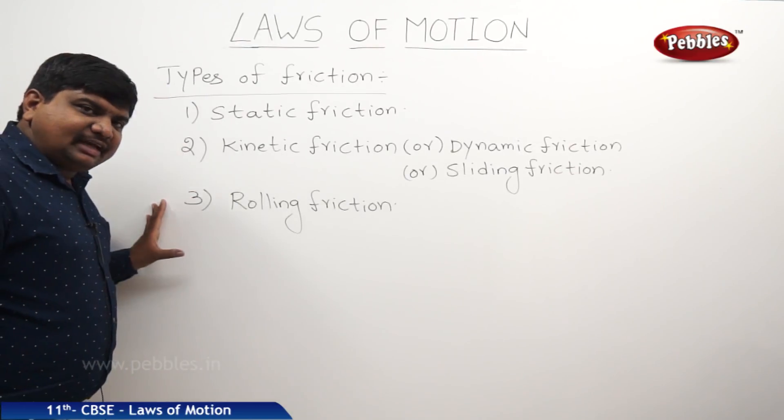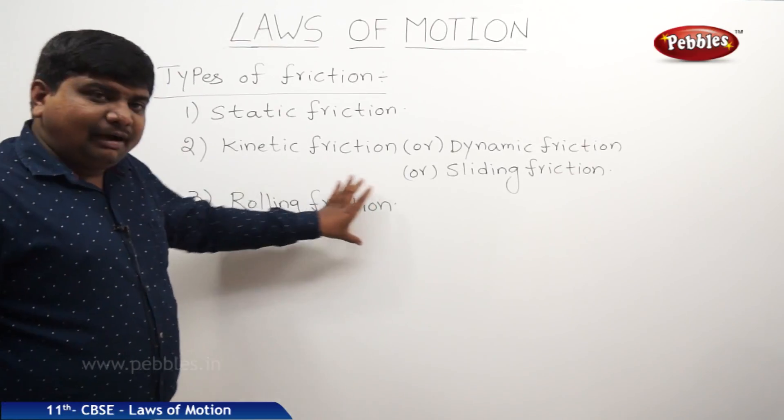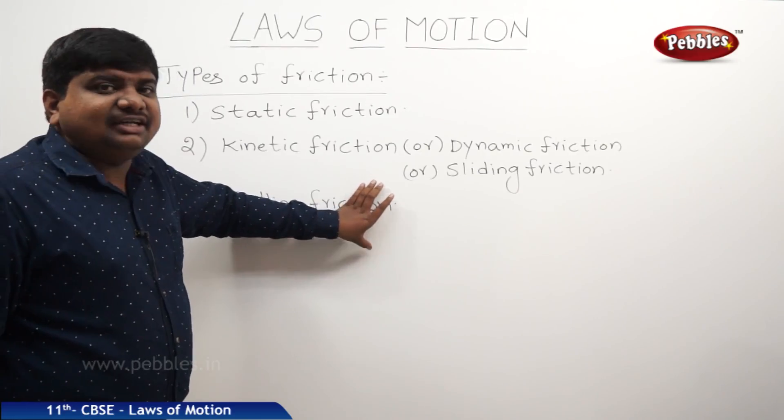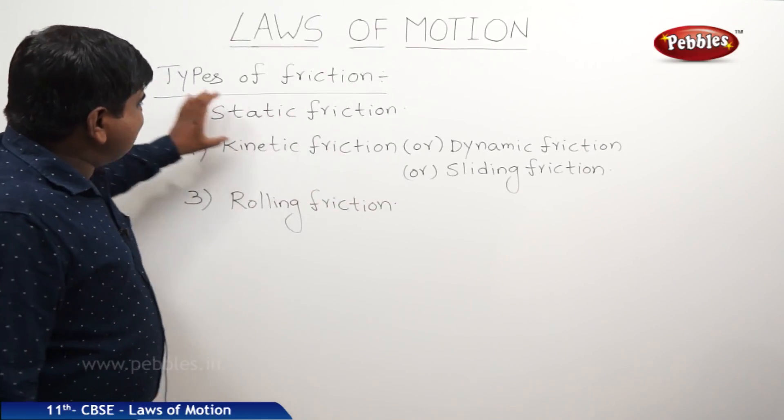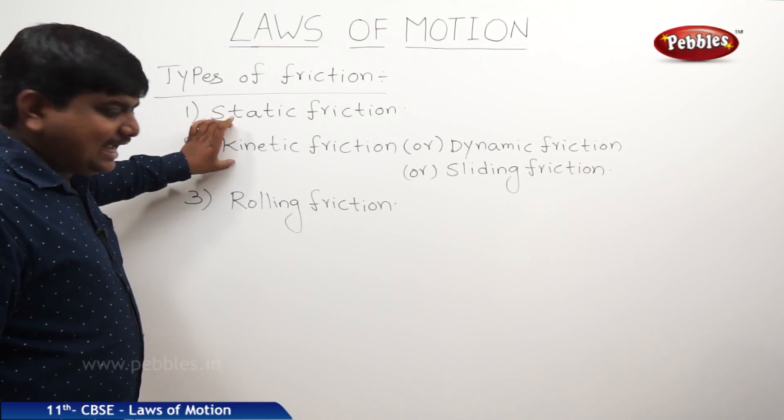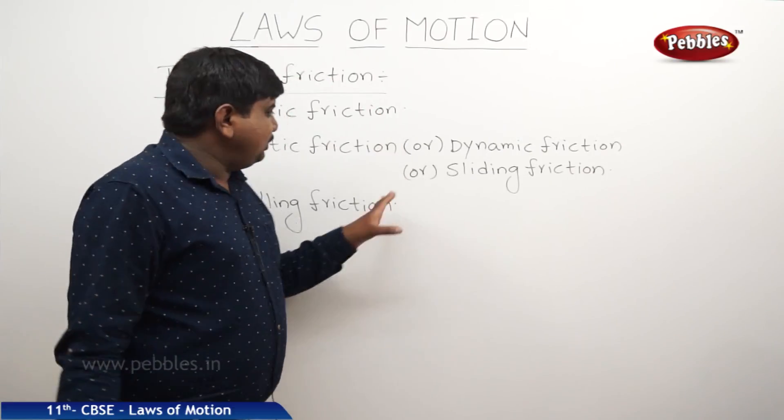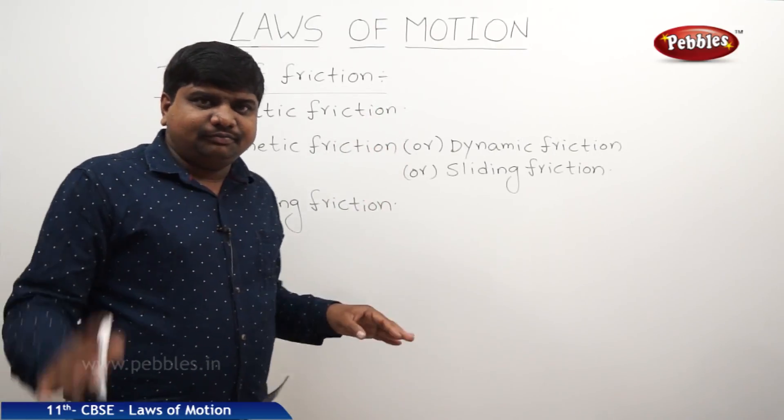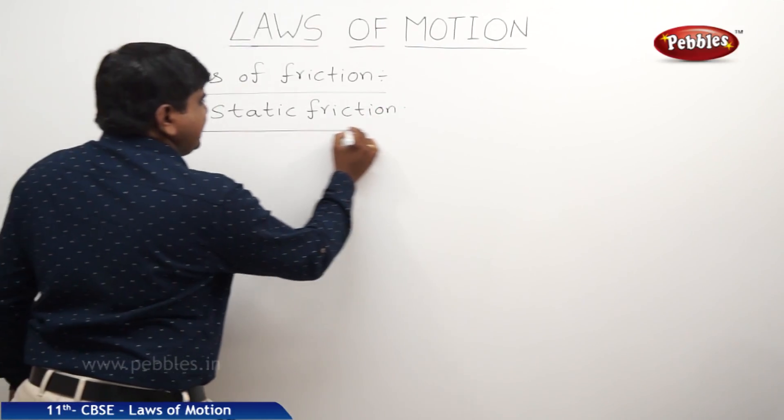These are the three different types of friction where we can observe in our daily life with different objects and different situations. So what is the equation where we can express these situations we are going to discuss now. Now we are going to discuss about the static friction.